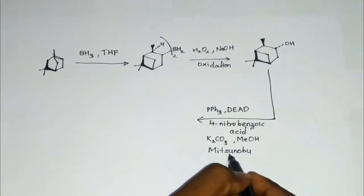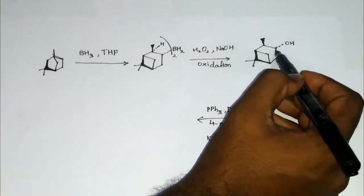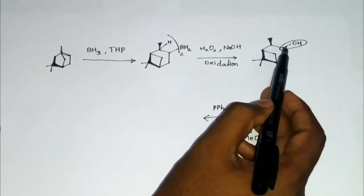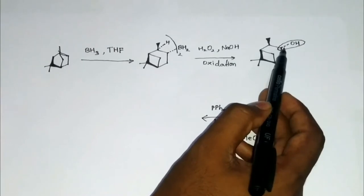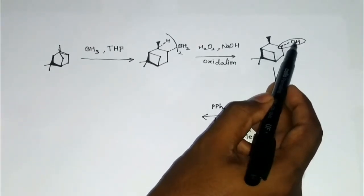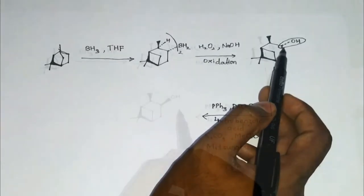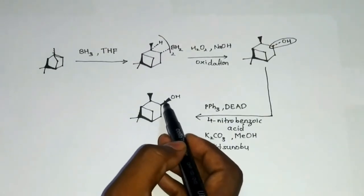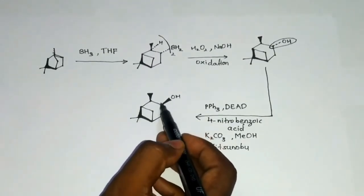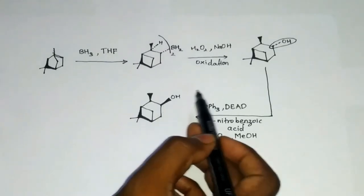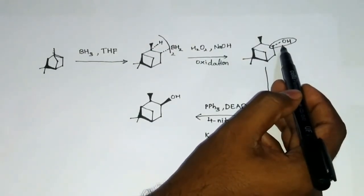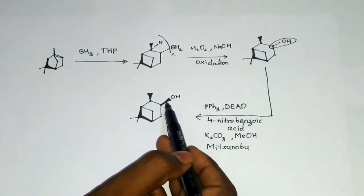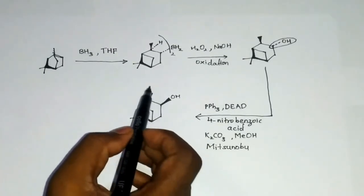In Mitsunobu reaction, it is going to replace this hydroxyl group. Since it follows SN2 mechanism, the stereochemistry of the resulting product will be opposite to that of the OH group here. After the reaction, in the resulting product the stereochemistry at this position has just changed. Here in this case it was below the plane of the paper. After the reaction Mitsunobu, the stereochemistry has changed and it is above the plane of the paper and all the three groups over here have the same stereochemistry, which is they are above the plane of the paper.